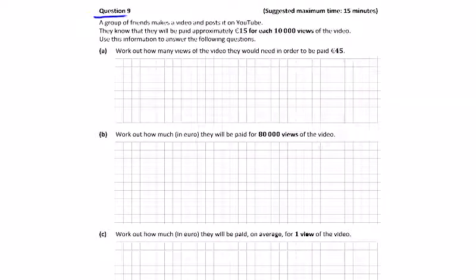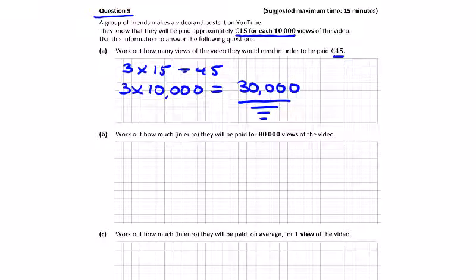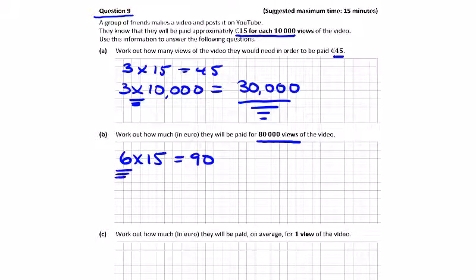Question 9: a group of friends make a YouTube video and are paid €15 for every 10,000 views. How many views to be paid €45? Multiply: 3 × €15 = €45, so 3 × 10,000 = 30,000 views. How much for 80,000 views? 80,000 is 8 × 10,000, so 8 × €15 = €120. Be careful to read the question properly.